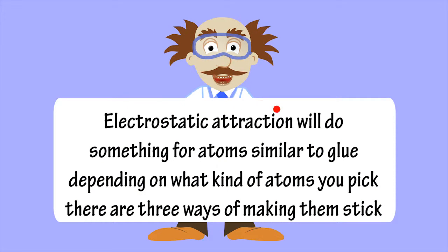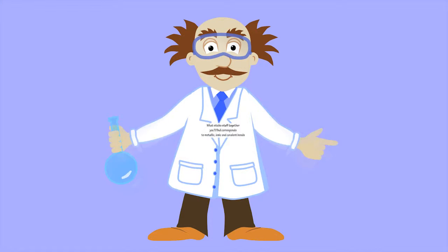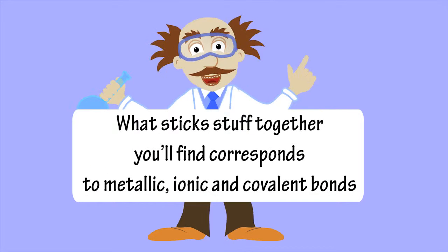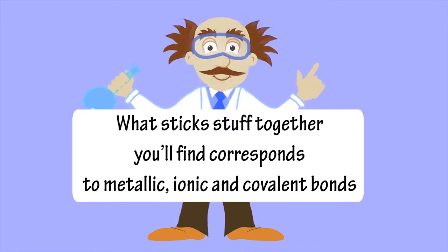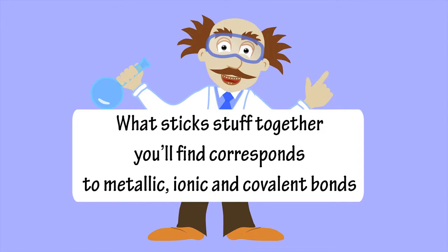Electrostatic attraction will do something for atoms similar to glue. Depending on what kind of atoms you pick, there are three ways of making them stick. What sticks stuff together you'll find corresponds to metallic, ionic and covalent bonds.